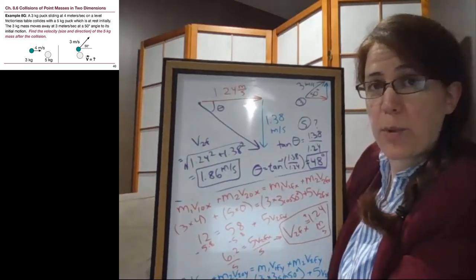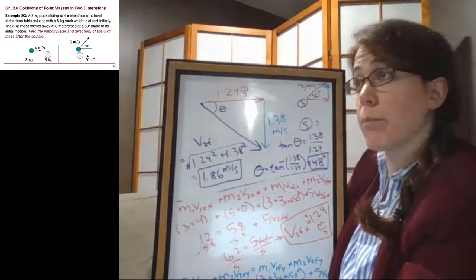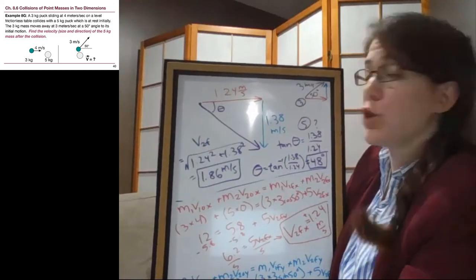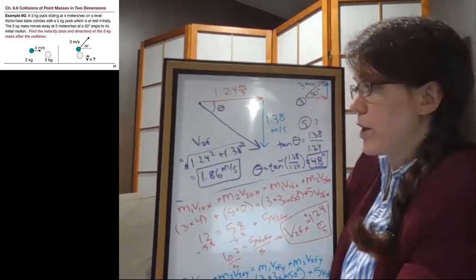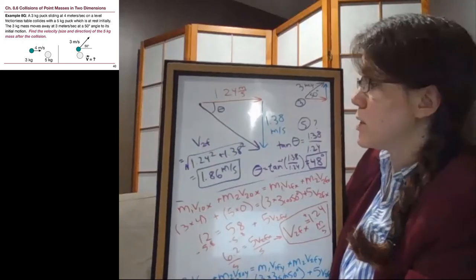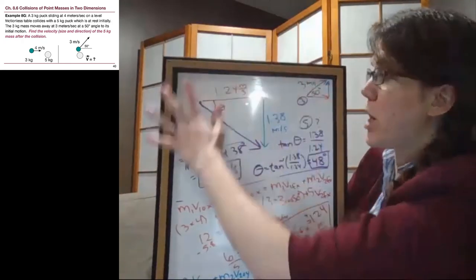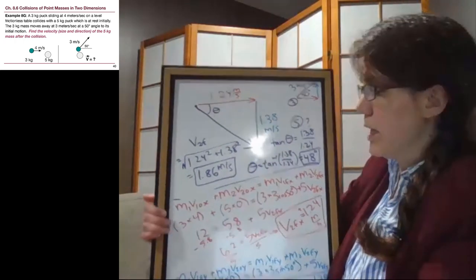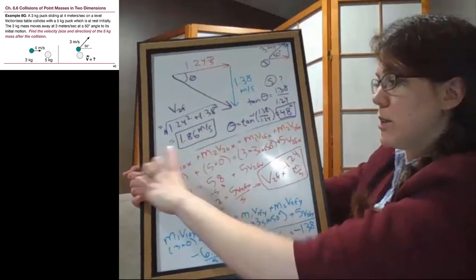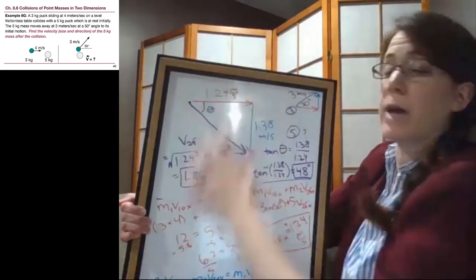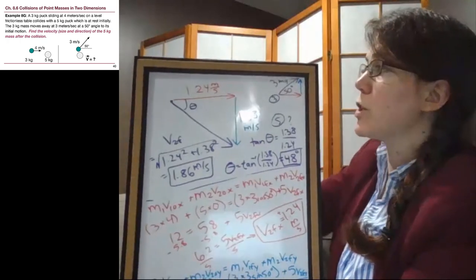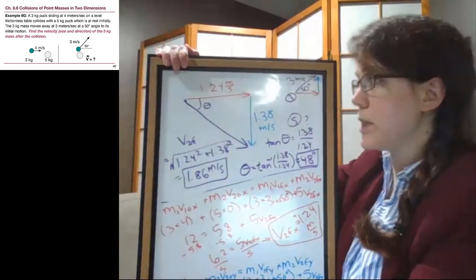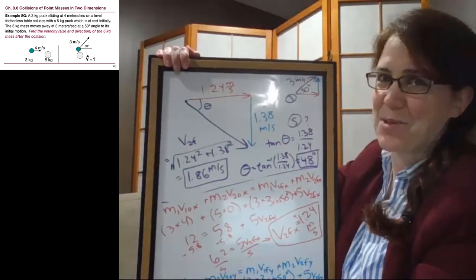We will see a second example in the remaining example for chapter 8 where the two blocks stick together, and we'll figure out how that works too. But overall, the process is the same as this one. We set up the problem. We have that whole list of all of the possible numbers that we might have. And then we looked at the x direction, and separately we looked at the y direction, and then put them back together in a triangle. So make sure to compare this example with the next one, example 8h, to see the similarities and differences there. I will see you in the next one.